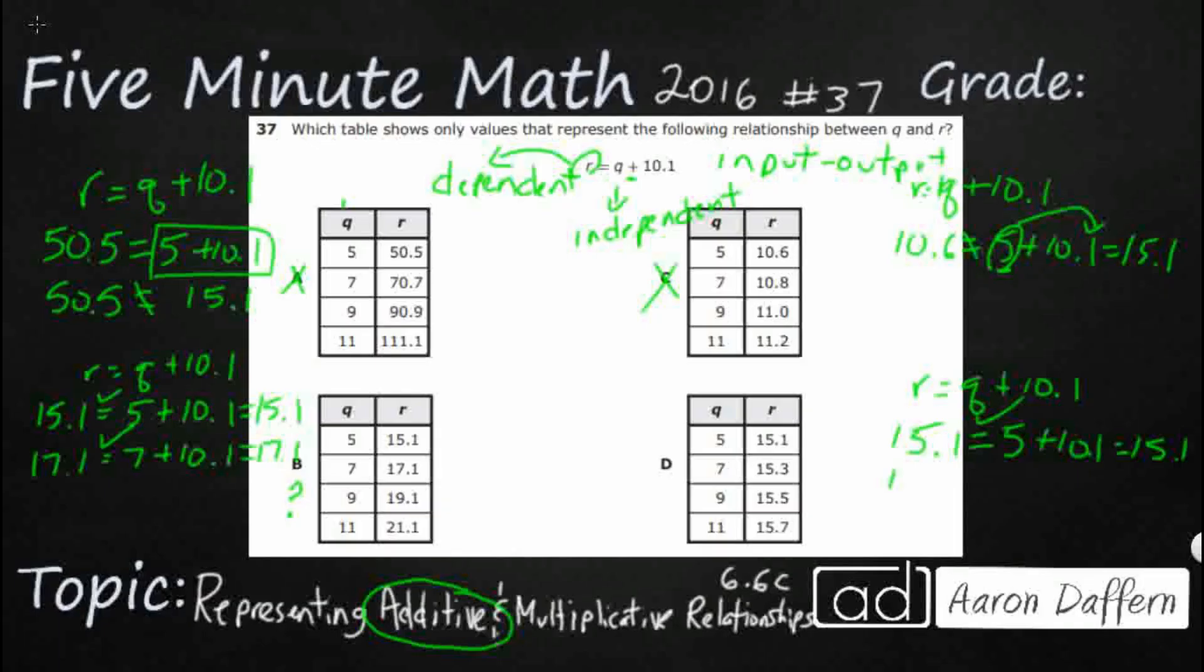That's why we go to the second one. Let's see if the second one works. 15.3 equals my q is now 7 plus 10.1. Nope. 10.1 plus 7 is 17.1. So this is where you get that wrong. So they just added the wrong q. So D is definitely not it.